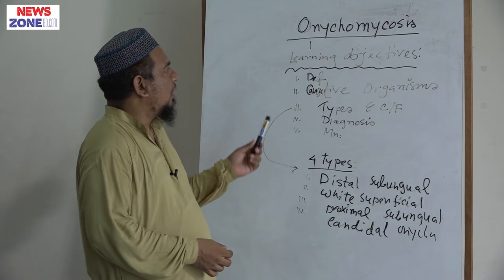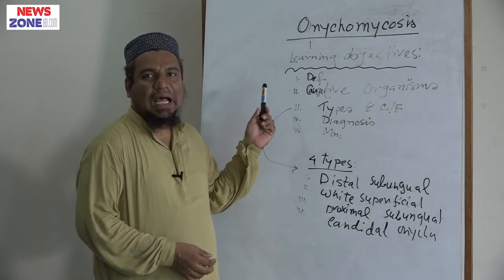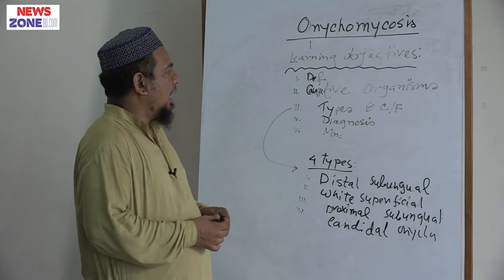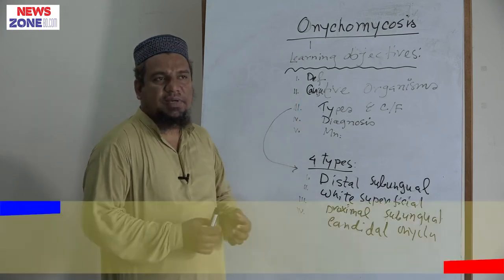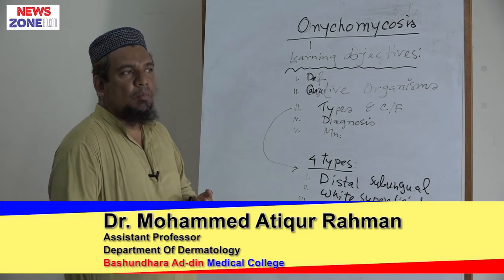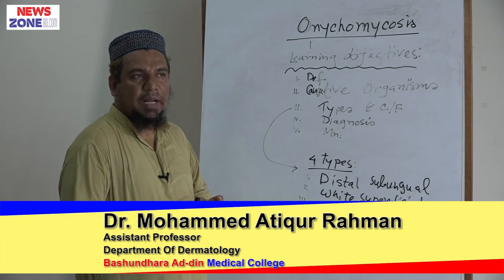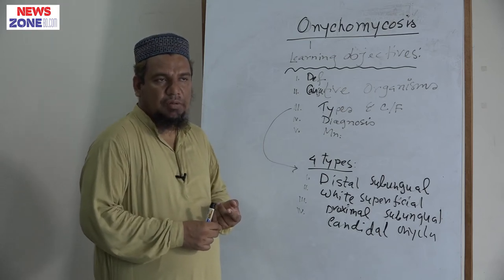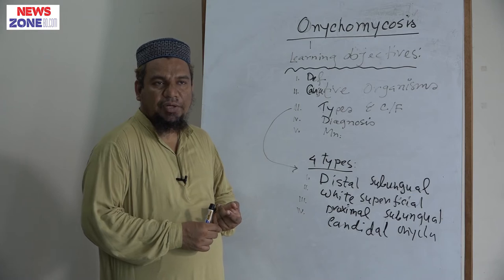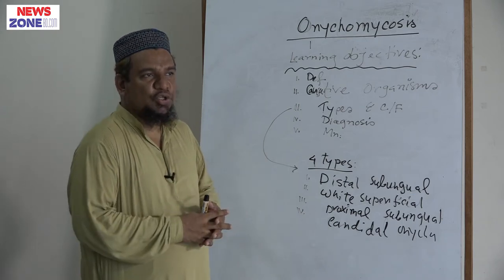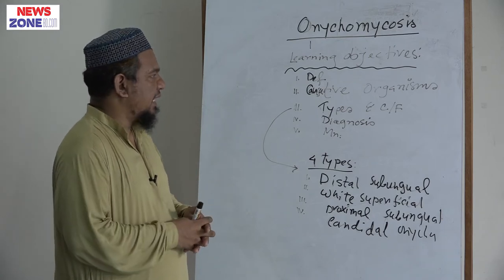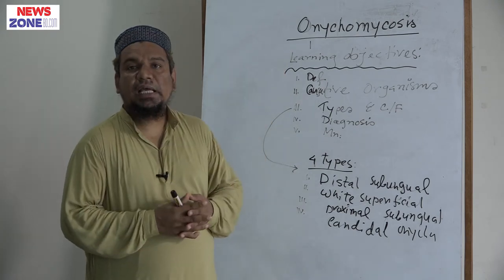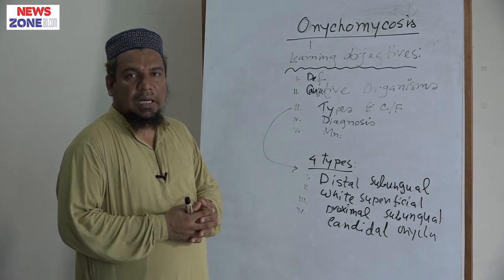Onychomycosis, another name is tinea unguium, that means fungal infection of the nail. It is caused by several organisms — fungus, mostly Trichophyton rubrum. Also, there is Candida infection, or other Trichophyton species, Microsporum, Aspergillus, etc. But mostly, the organism involved in onychomycosis is Trichophyton rubrum.